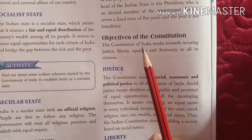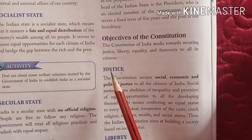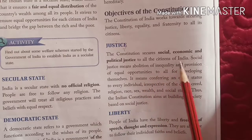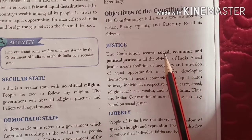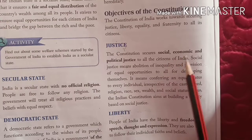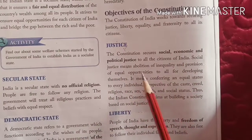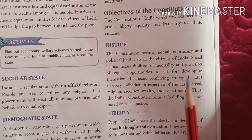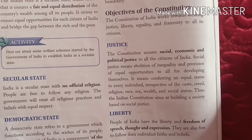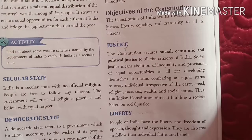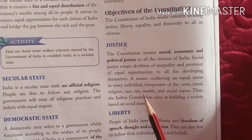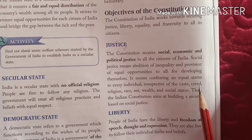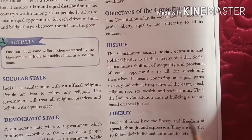Now we will discuss the objectives of the Constitution. The first objective is Justice. The Constitution secures social, economic and political justice to all the citizens of India. Social justice means abolition of inequality and provision of equal opportunity to all for developing themselves. It means conferring an equal status to every individual, with no discrimination on the basis of caste, creed, religion, race, sex, wealth or social status.